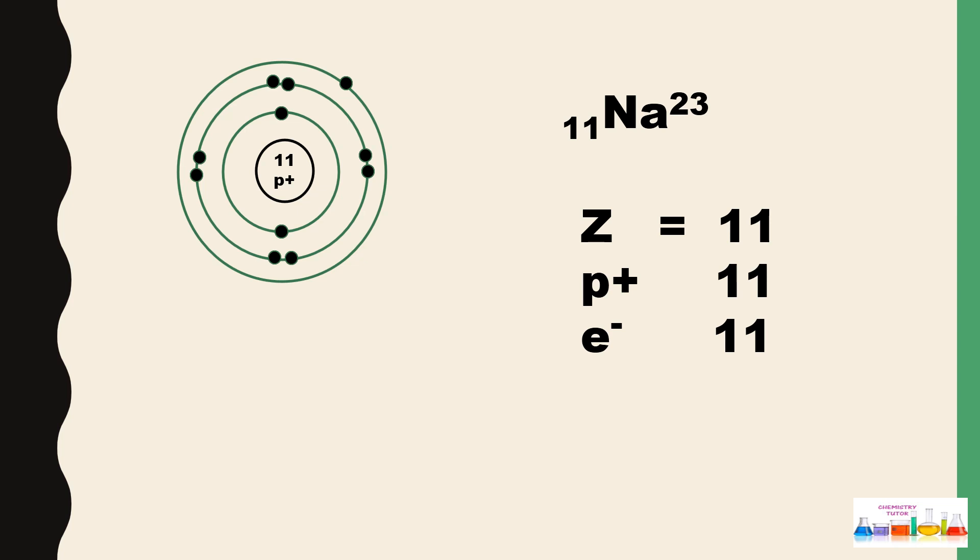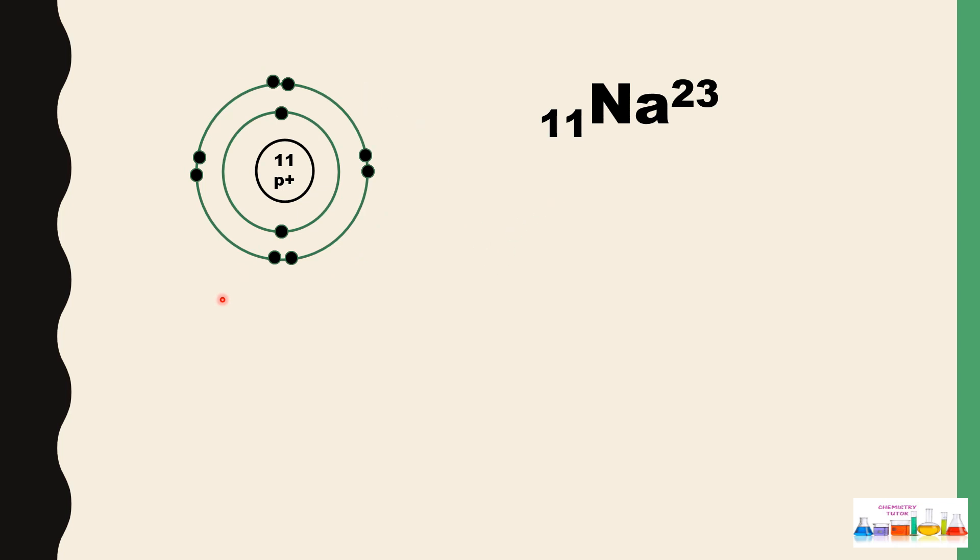Now let's see the formation of sodium ion. When sodium loses its one electron, only 10 electrons will be left and a positive charge will appear on the sodium.